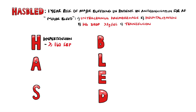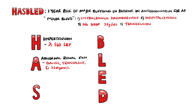H again stands for hypertension, but in this case the cutoff is 160 systolic. A is for abnormal renal and abnormal liver function. For renal function, the patient may be on dialysis, has had a transplant, or has a creatinine level above 200 micromoles per litre.